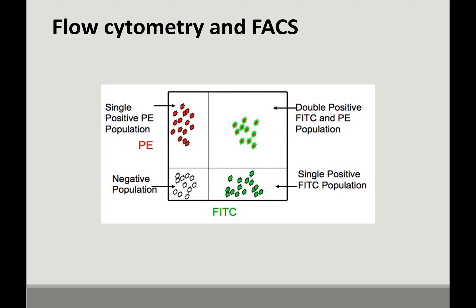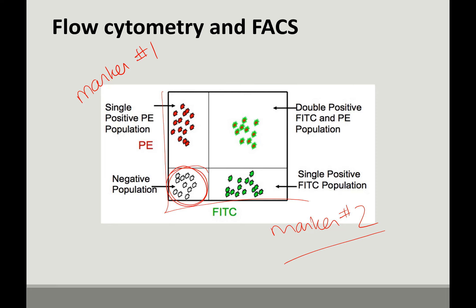The way data from flow cytometry is presented is often on a graph where you have marker number one and marker number two. One marker might be red and the other green. Your data is expressed in quadrants: the bottom population is negative for both markers; one quadrant is positive for the first marker; another is positive for the second; and the final is positive for both. As we get closer to the final exam, I'll give you examples of flow cytometry and FACS data to analyze.